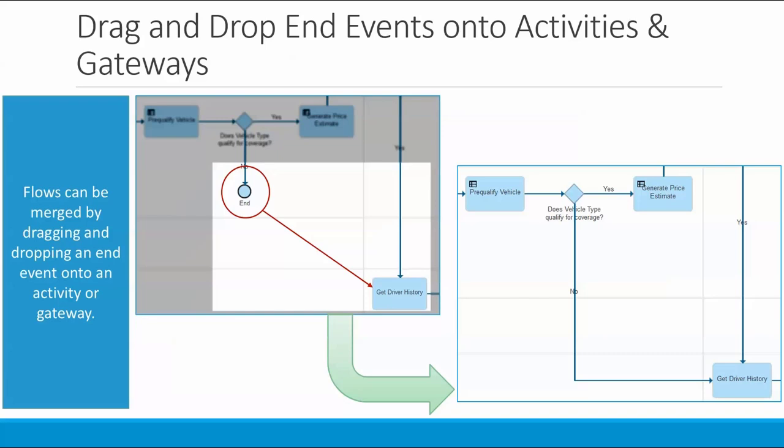A much more common action involves connecting up a flow to an activity or gateway in another flow. Today this takes a few mouse clicks, but now you can just do it in one step by dragging the end event and dropping it onto the activity or gateway that you want it connected to. As you can see in the diagram on the right-hand side here, the flow line is connected and the end event is automatically deleted for you.